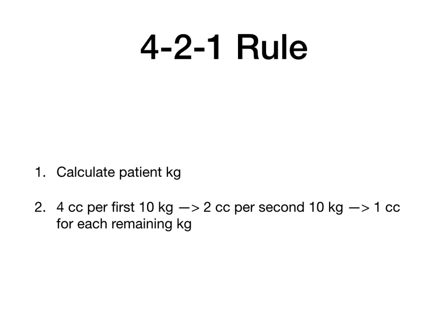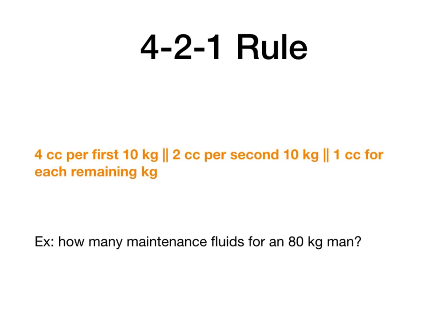Here's how it works: you look at their total kilograms. For each of the first 10 kilograms, they get 4 cc's. Then they get 2 cc's for the second 10 kilograms. And for every kilogram remaining thereafter, they get 1 cc. We add all this up and figure out how many maintenance fluids they get.